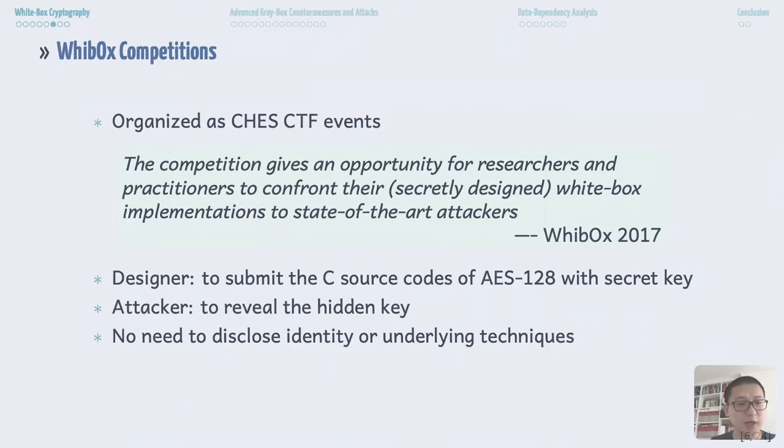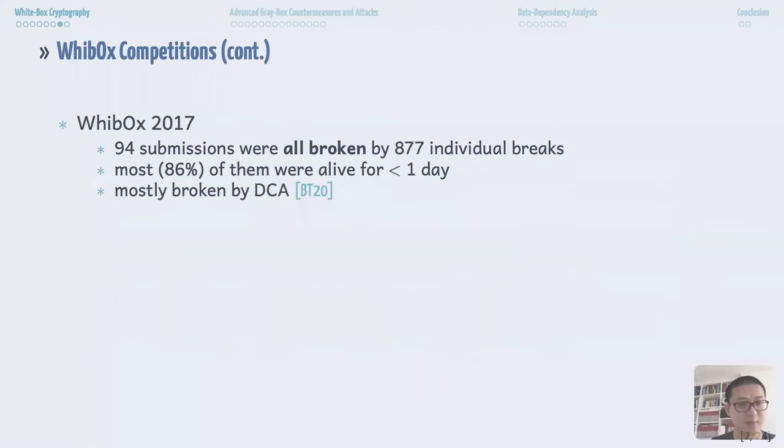In this context, two editions of WhibOx competition are organized as CHES CTF events. As quoted from WhibOx 2017, the competition gives an opportunity for researchers and practitioners to confront their secretly designed white box implementations to the state-of-the-art attack. The competition invites designers to submit C source code of AES-128 with the secretly chosen key and invite attackers to reveal the hidden key in this implementation. The participants don't have to disclose their identity or designing or attacking techniques. The first competition took place in 2017. It attracted 94 submissions which were all broken with nearly 900 individual breaks. Most of them were broken in one day and it is reported that most of them were broken simply by DCA attacks.